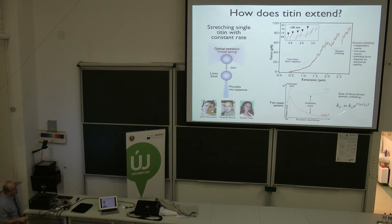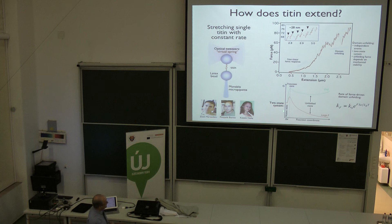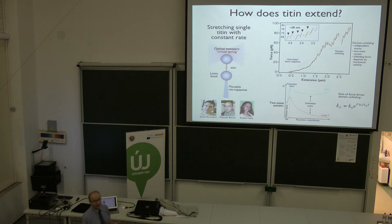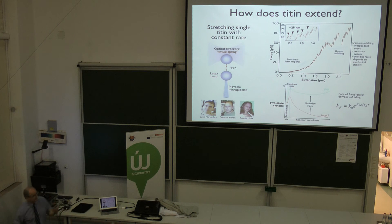This can be described by a so-called two-state model of unfolding. This is the folded state, the native state, and this is the unfolded state. By increasing the force, we are actually lowering the barrier towards unfolding. Eventually, we expect that the molecule might recover its length by refolding in a simple step - a reversible two-state process.